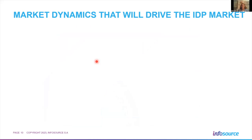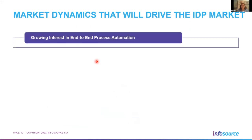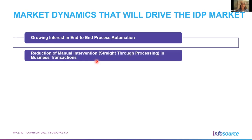Now Petra Beck takes a look at the future, examining market dynamics that are going to influence the IDP market and the changing requirements from an end-customer perspective for the next couple of years. Starting with the growing interest in end-to-end process automation — the core topic of this webinar — we'll see interesting examples from vendors later on and how they are going to enable that next step toward end-to-end process automation.